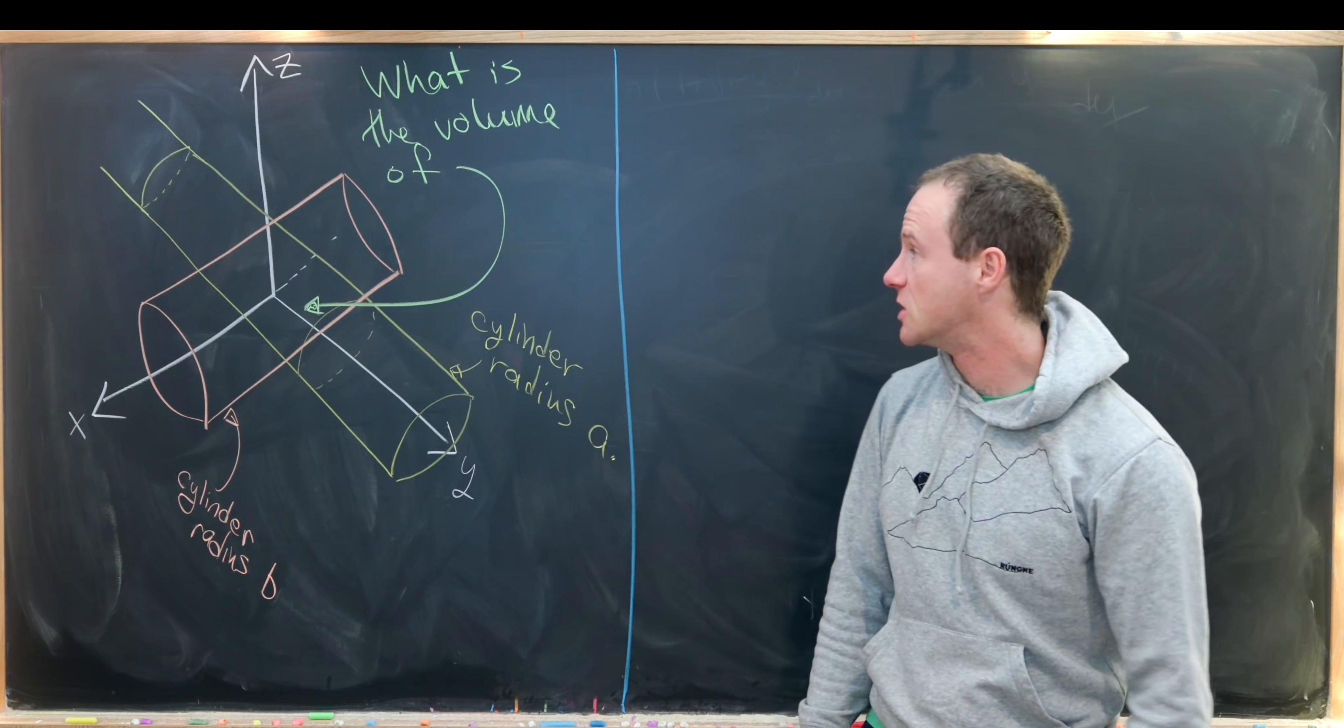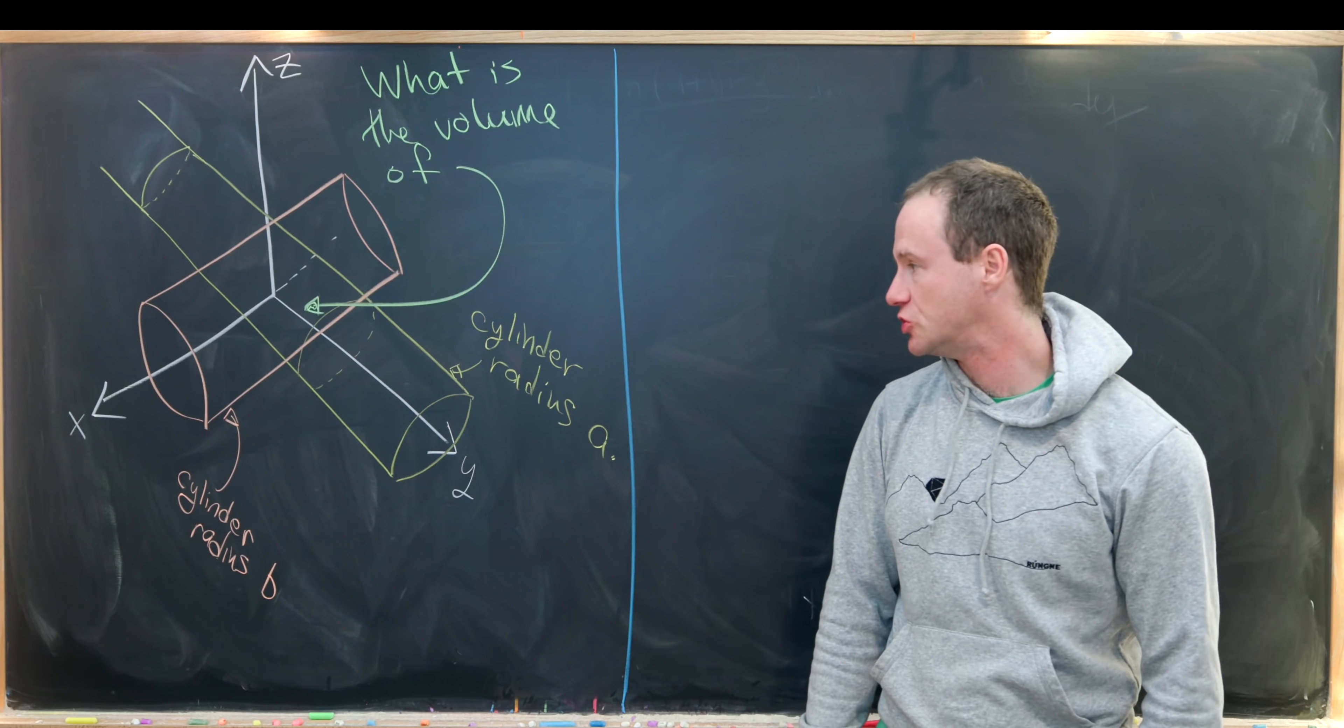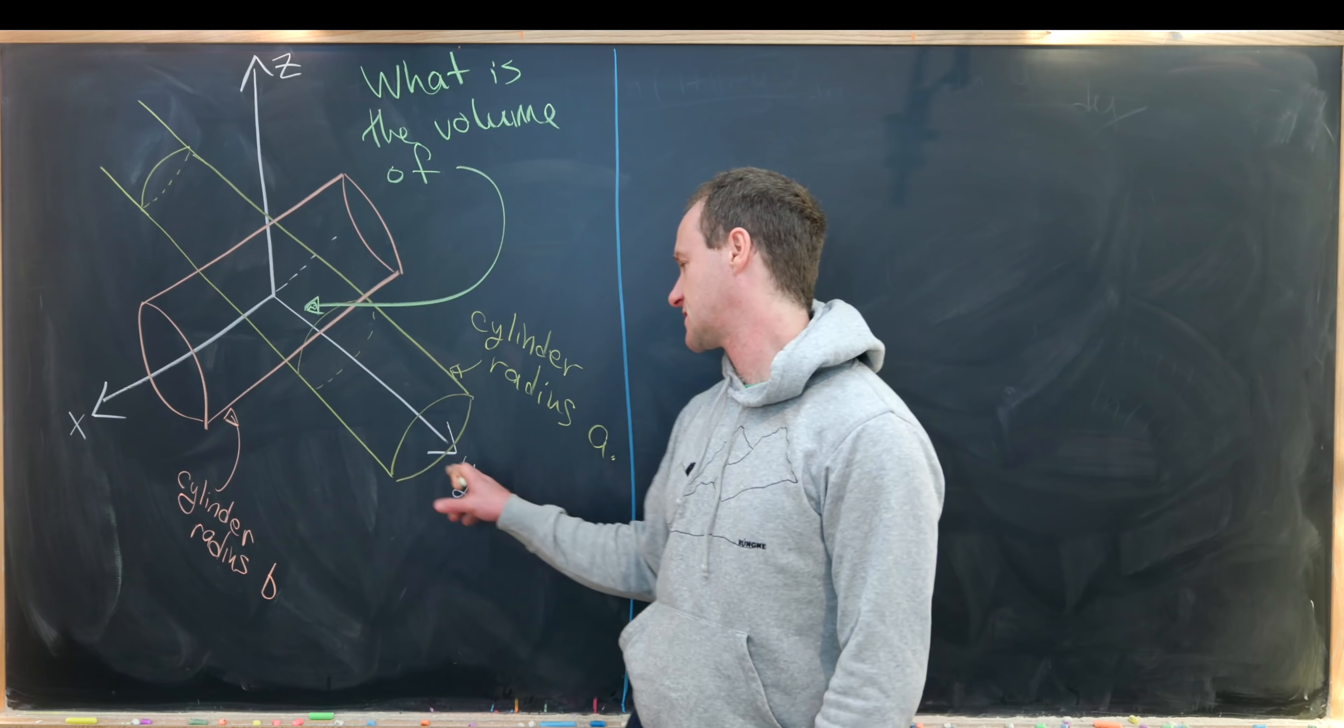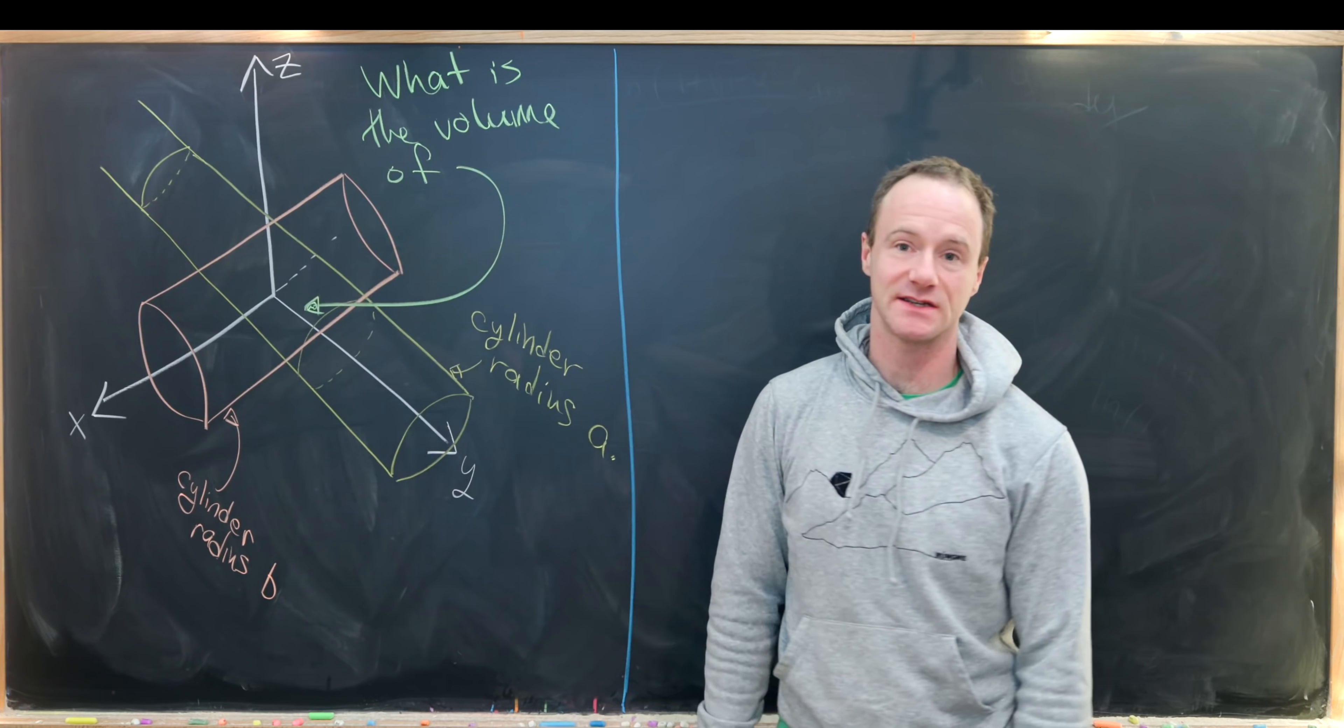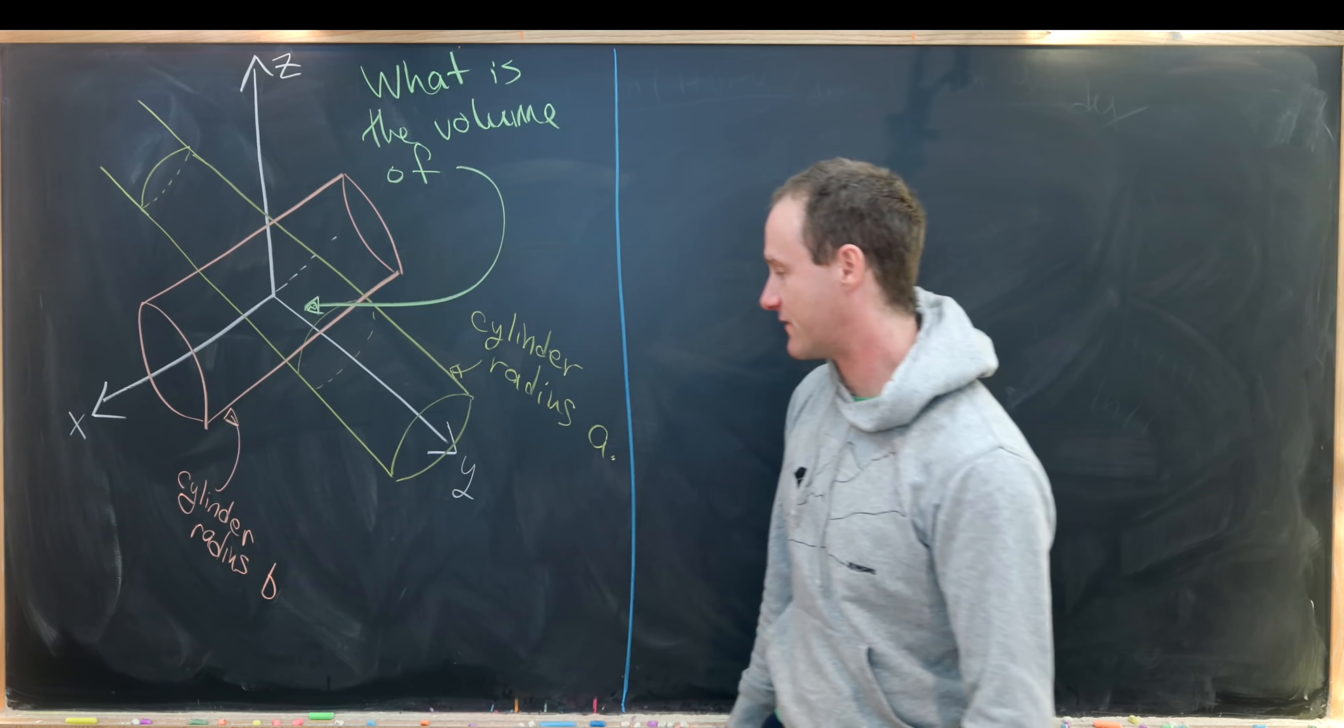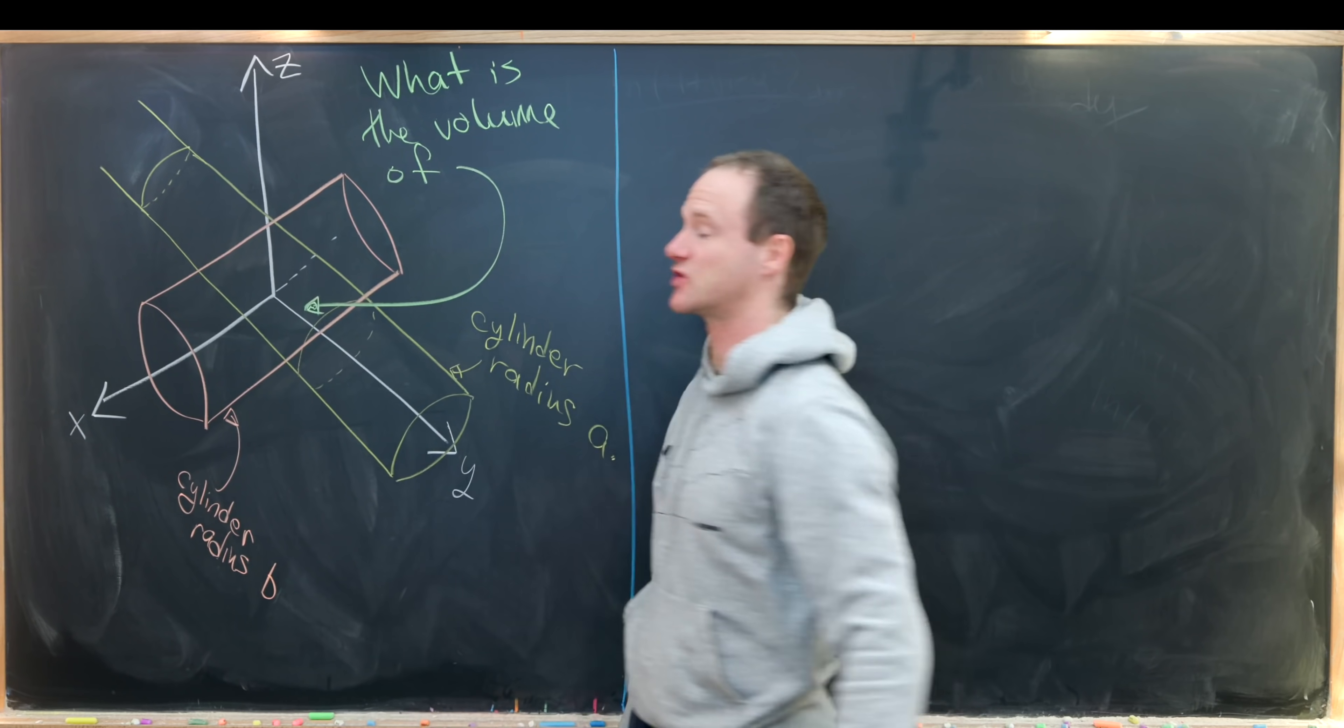Here we're going to find the volume of something known as a double cylinder. A double cylinder is the intersection of two cylinders. I've set this up in R³ with the x-axis, y-axis, and z-axis. Running down the x-axis, I have a cylinder of radius b, and running down the y-axis, I have a cylinder of radius a. Our goal is to find the volume of this intersecting object.